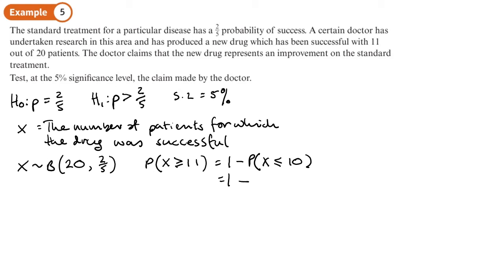So we can do that on our calculator. We'll go to menu 7 and we'll go to binomial CD, and we'll go to variable X is 10, n is 20, and p is two-fifths or 0.4. When I do that I'll get a value of 0.8725. So now I'll go menu 1 and I'll just do 1 minus answer, and I get 0.1275.